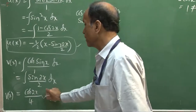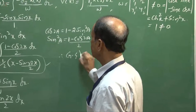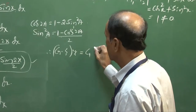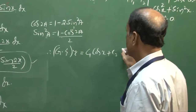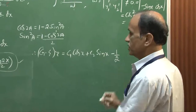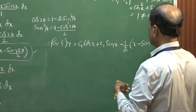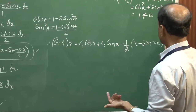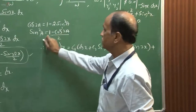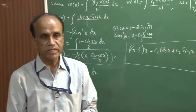With ux and vx determined, the general solution y equals c1 cos x plus c2 sin x, plus ux which is minus one half times x minus sin 2x divided by 2, plus vx which is cos 2x divided by 4. This is the general solution for this problem, which includes two arbitrary constants c1 and c2.